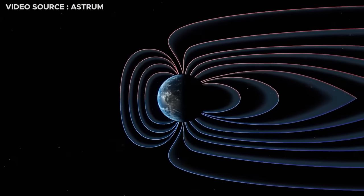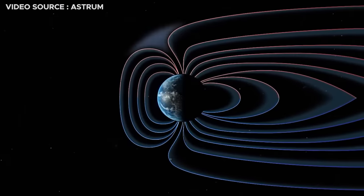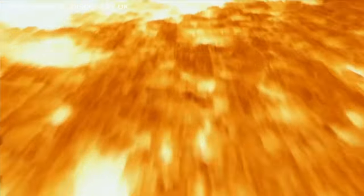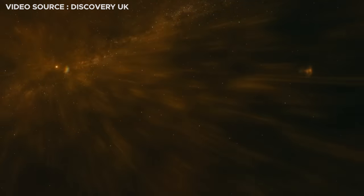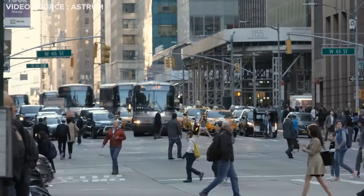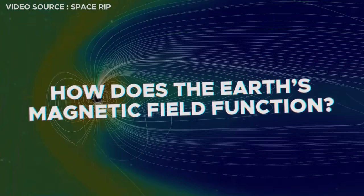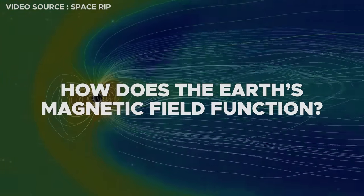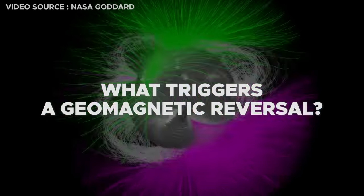The Earth's magnetic field acts as a protective shield against the formidable solar winds and cosmic radiation that pose a threat to stripping away our atmosphere and endangering life on Earth. So how does the Earth's magnetic field function, and what triggers a geomagnetic reversal?